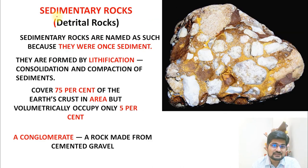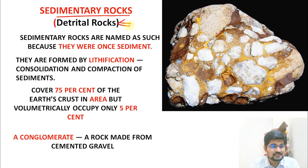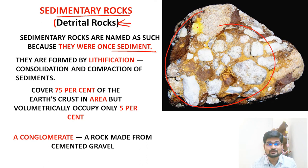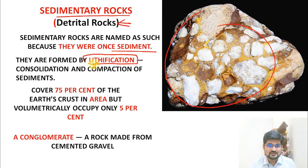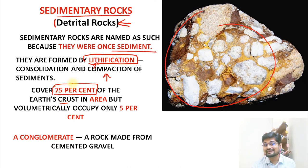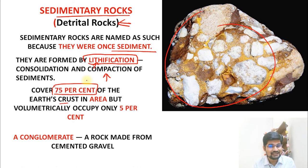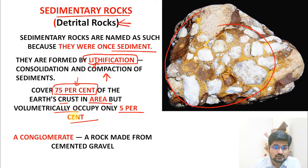Sedimentary rocks, also known as detrital rocks, have layers of sediments containing remains of plants and animals. They were once sediments that through agglomeration, compaction, and coalescence formed rock via a process called lithification — 'lith' relating to rock. By statistics, sedimentary rocks cover 75% of the earth's crust by area, but only 5% by volume. Deposition into geosynclines with compaction leads to young fold mountain formation.